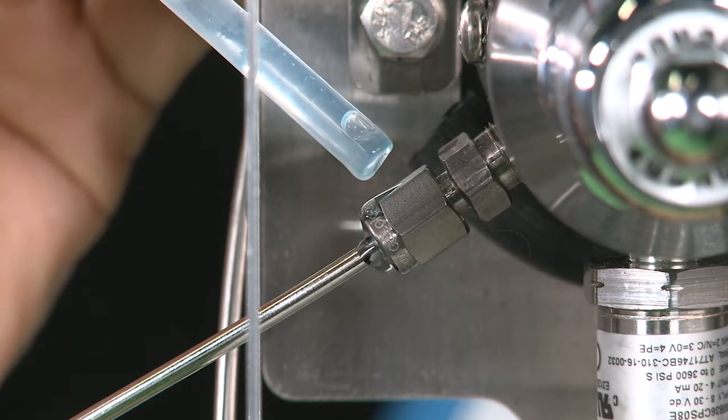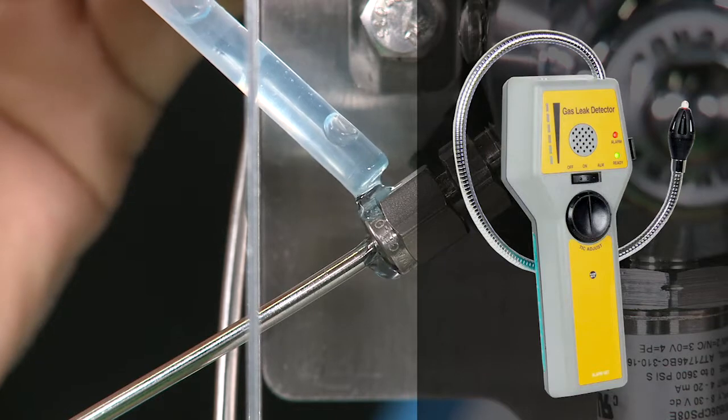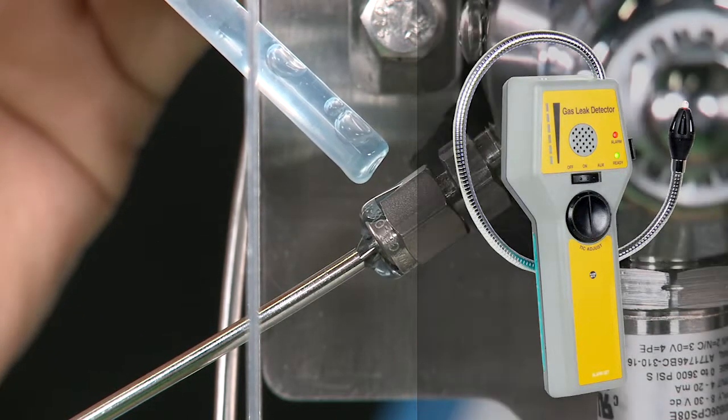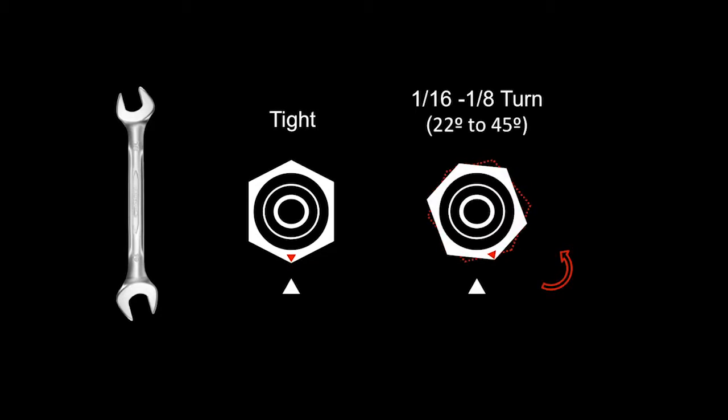Alternatively, a portable helium leak detector may be used to sniff for leaks around the fittings on a wind-still day. If a leak is detected, tighten the leaking fitting by 1/16th to 1/8th of a turn, 22 degrees to 45 degrees.